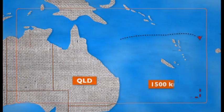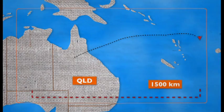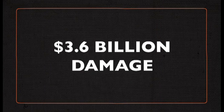At almost 1,500 kilometres wide, the storm didn't completely disperse until it had nearly reached Alice Springs, causing $3.6 billion damage.